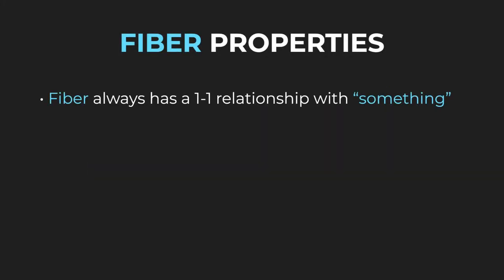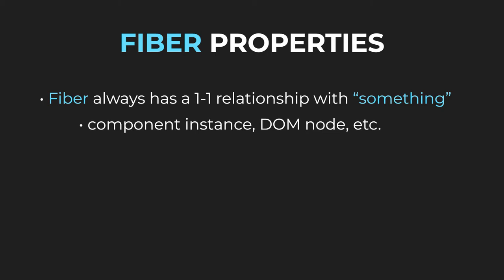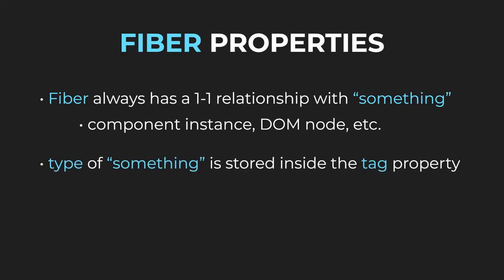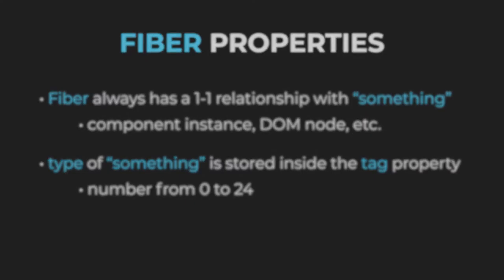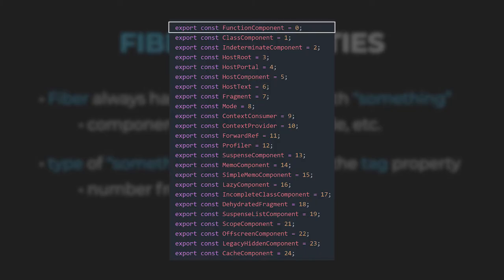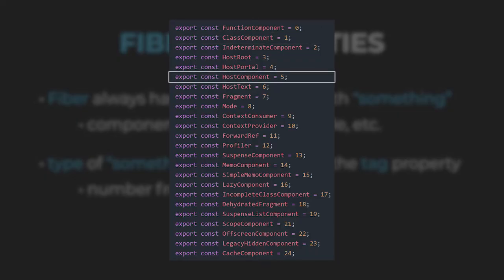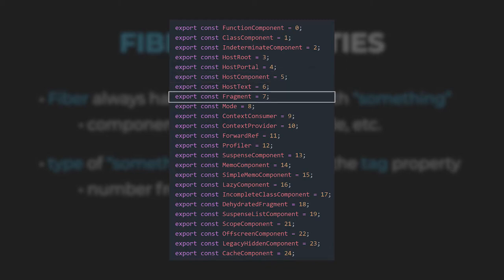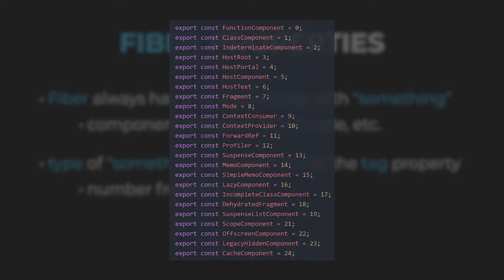A fiber always has a one-to-one relationship with something — this can be an instance of a React component, a DOM node, or maybe something else. The type is stored inside the tag property. Currently it can be a number from 0 to 24, covering possibilities like function component, class component, and many more. An important one is host component, which is specific for rendering environments — in terms of the web, a host component can be a div or paragraph. We can also see fragment, context consumer, context provider, and others. The tag property stores the type of thing on the other end of the one-to-one relationship.